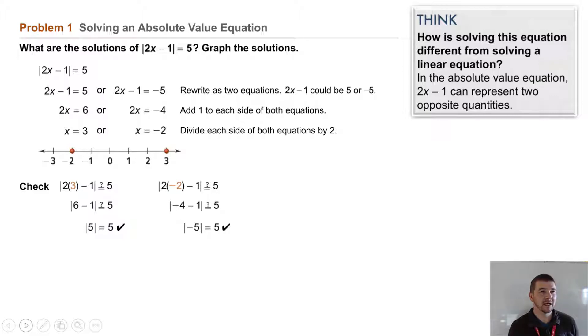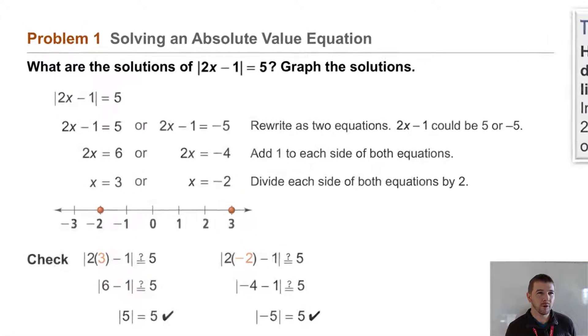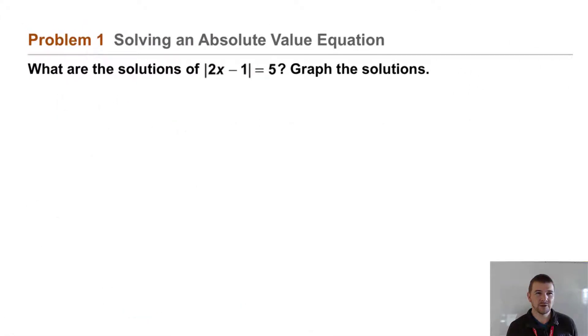Problem 1: Solving an Absolute Value Equation. What are the solutions of |2x - 1| = 5? Graph the solutions. Here we've rewritten the absolute value equation, and then we rewrite it as two equations.